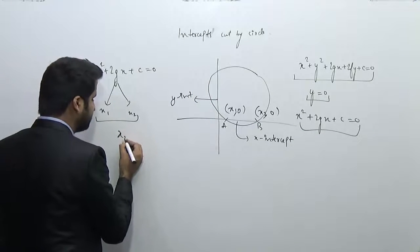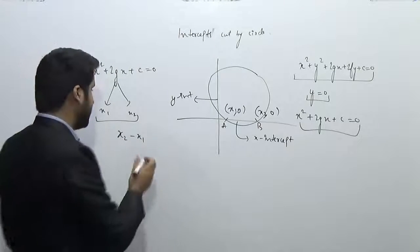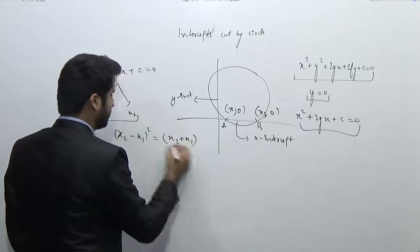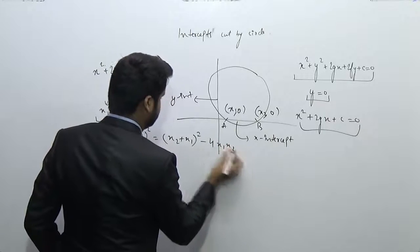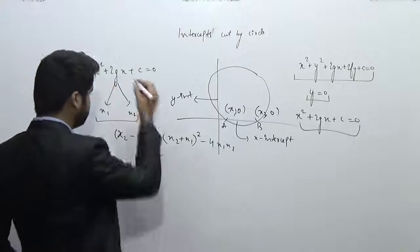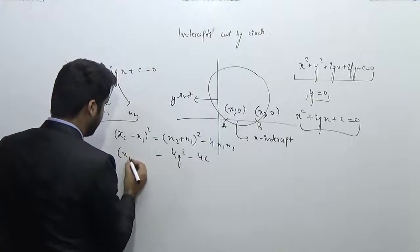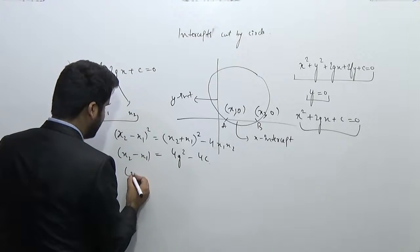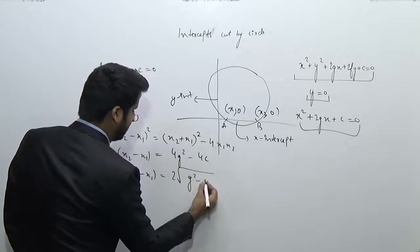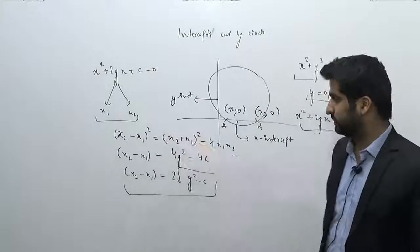Now what I have to find is the difference between the two roots. This can easily be calculated using the theorem: (x₂ - x₁)² = (x₂ + x₁)² - 4·x₁x₂. I know the sum of roots is -b/a, so this becomes 4g² - 4c. Therefore, x₂ - x₁ = 2√(g² - c). So this is the value of the x-intercept cut by the circle.